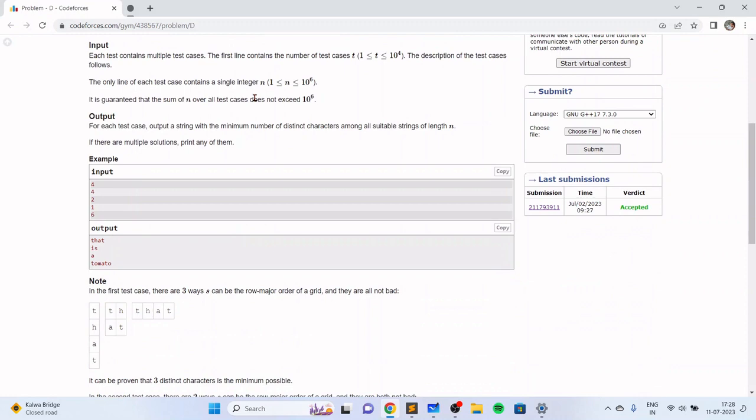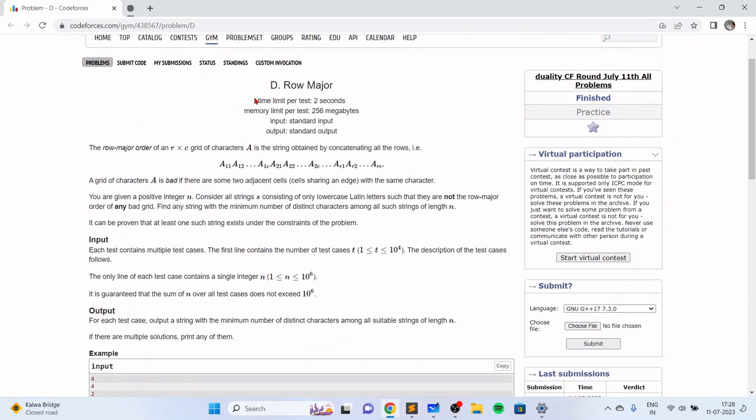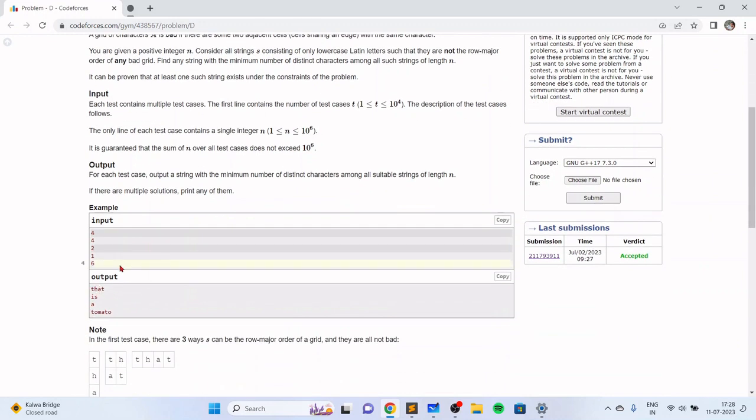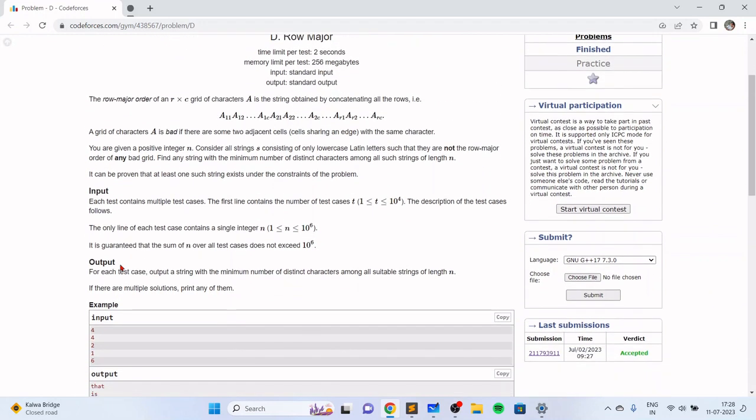Once you write the string in row major order, once you do the reverse of it and construct the grid using this row major order of the string, the grid does not contain any two adjacent cells with the same character.